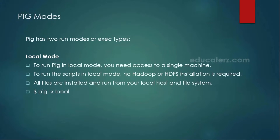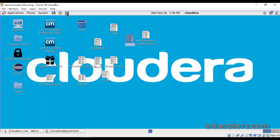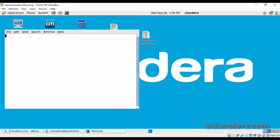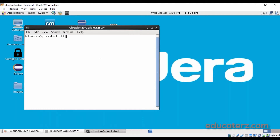We have two different types of modes to log into PIG: one is the local mode and the other is the MapReduce mode. Let me show you how to log into these modes. I am logging into my Cloudera Quickstart VM where PIG is already installed, so I can directly log into the PIG shell. Just open the terminal and enter 'pig' — this will automatically take you to the MapReduce mode.